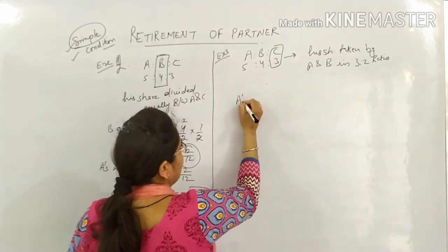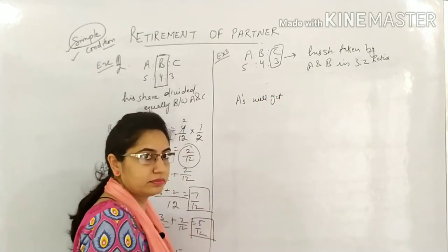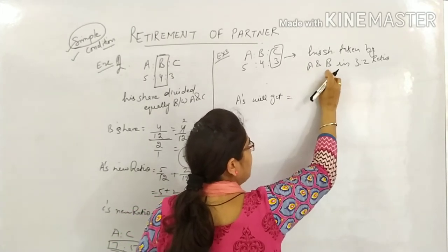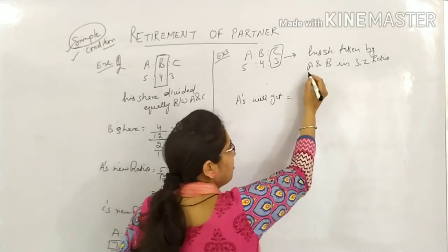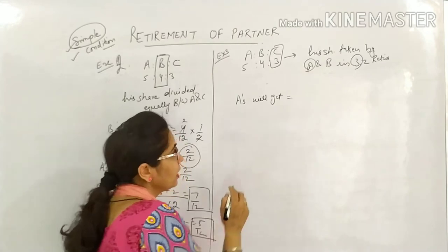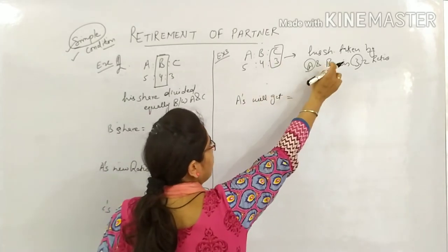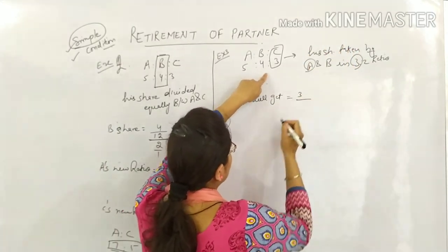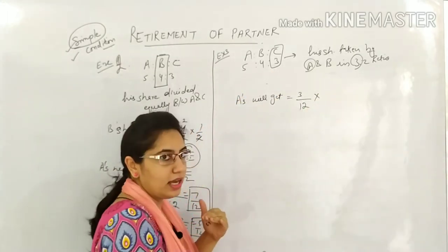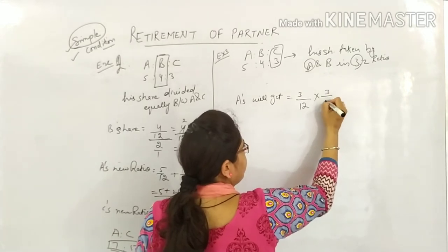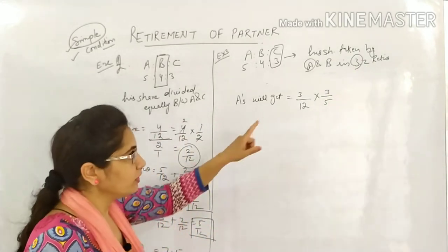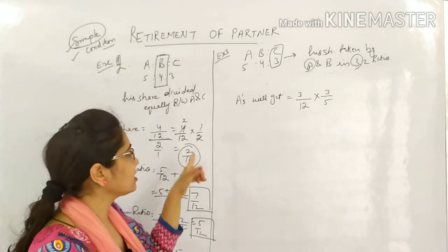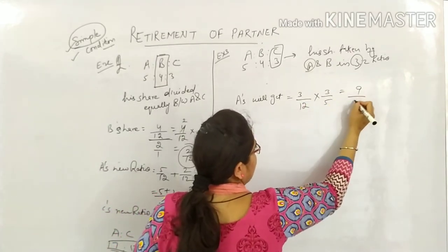A will get: C's share is 3/12. Since A's name comes first, A gets the 3-part, i.e., 3/5 of C's share. So A gets 3/12 × 3/5 = 9/60. The keyword 'ratio of' means we multiply. B gets 3/12 × 2/5 = 6/60.